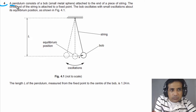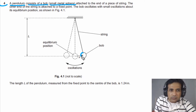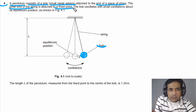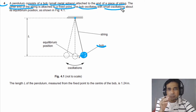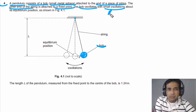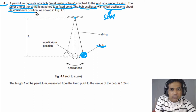For question number 4, it is given to us: a pendulum consists of a bulb, meaning a small metal sphere, attached to the end of a piece of string. The other end of the string is attached to a fixed point. The bulb oscillates with small oscillations — a very important point. If the angle of oscillation, meaning the angle with the vertical, is less than 15 degrees, it means the motion of this pendulum is simple harmonic motion. So we can use principles of simple harmonic motion about its equilibrium position.